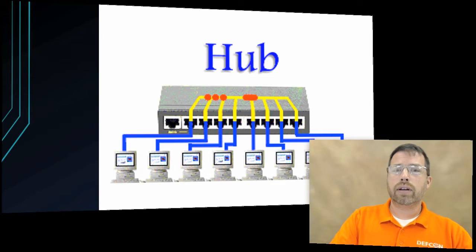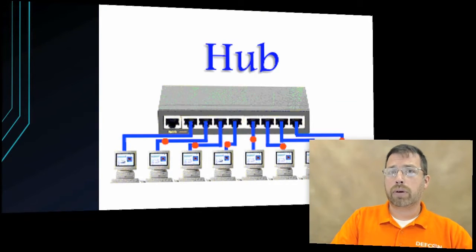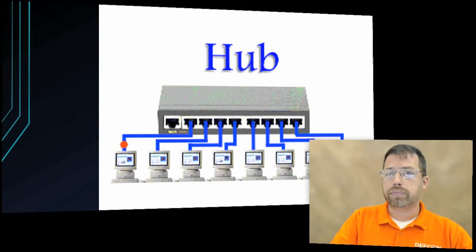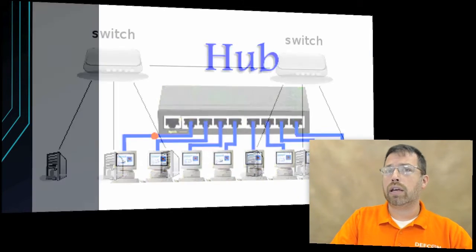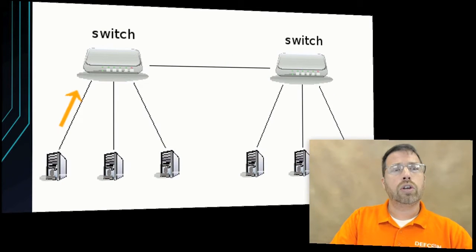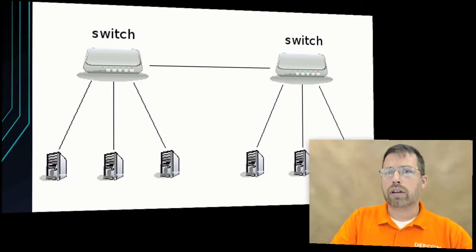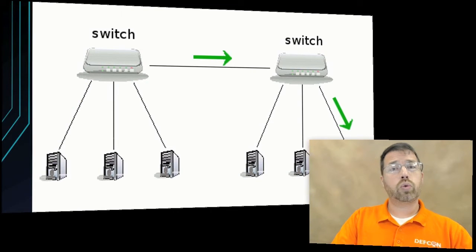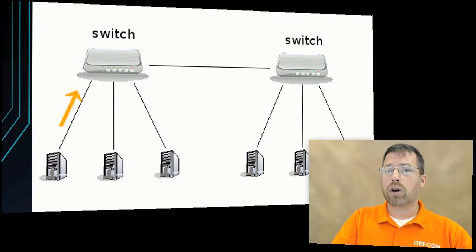With different levels of the OSI model, a hub is probably one of the most basic we can find, working at OSI layer one. The next device I want to look at is a switch. A switch with the OSI levels is typically layer two. You'll hear about a layer three switch and we'll get to that, but most of the time we're going to see layer two switches.